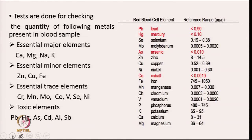The essential major elements are required, and if the concentration of these metals is lower in our body, that can create problems. For example, if there is no iron, a person is in an anemic condition and is suffering from anemia. Low concentration of iron is not good. Similarly, high concentration of iron is also not useful. So you need to have a balance of iron in our body, and if I want to know the amount of iron in our blood sample, we need to analyze these metal ions.